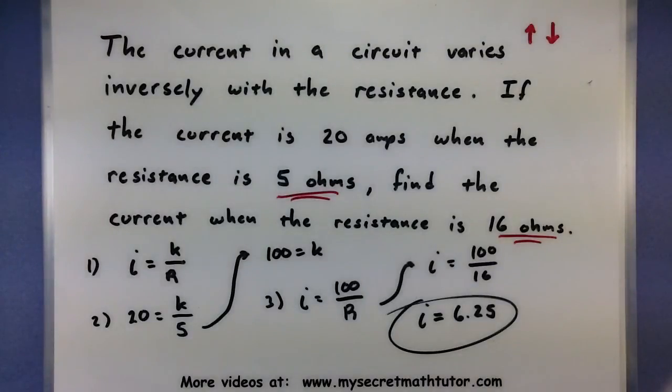What was my other variable? The current started at 20 and it went down to 6.25. So I know that this must be in the ballpark and is the right answer.